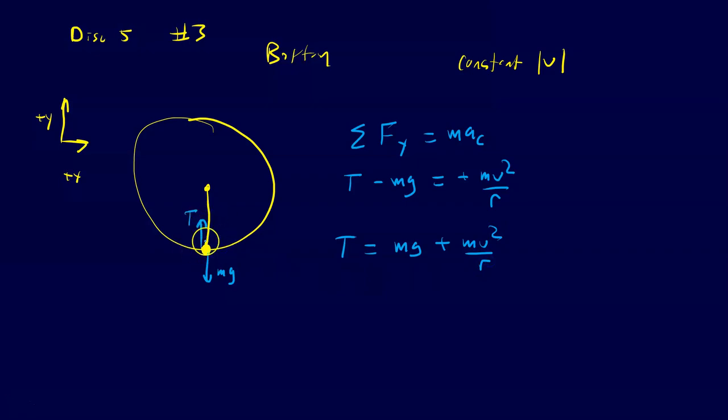In this case, the tension is going to be the force that's in the same direction as the centripetal acceleration, so it's the force responsible, but it also has to overcome mg. It has to pull up the gravitational force and then do a little bit more on top of that in order to keep this thing moving in uniform circular motion.